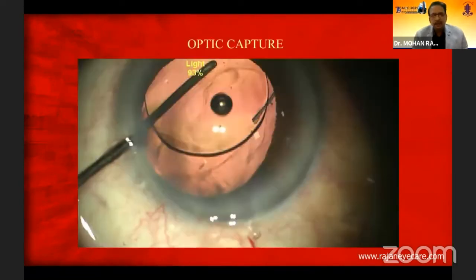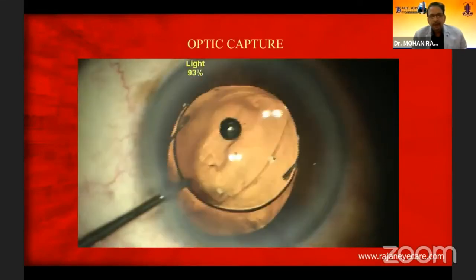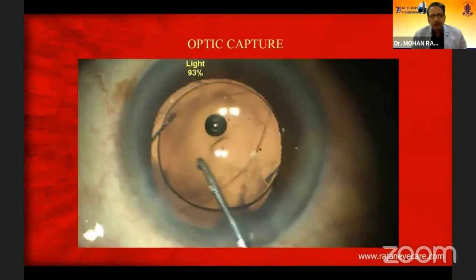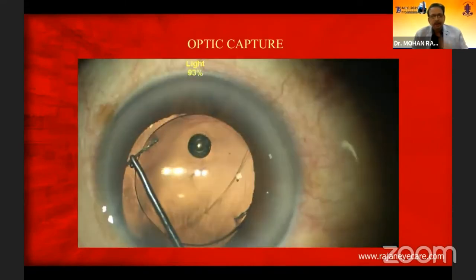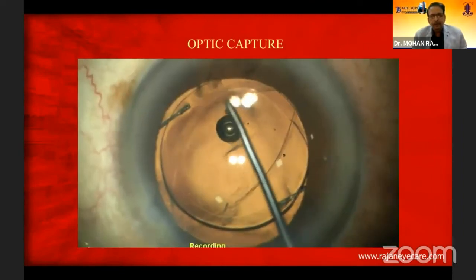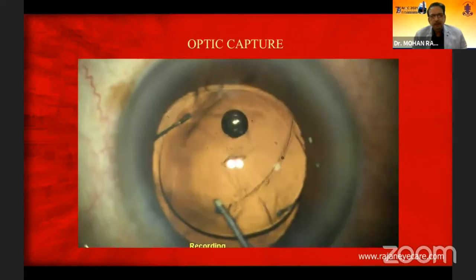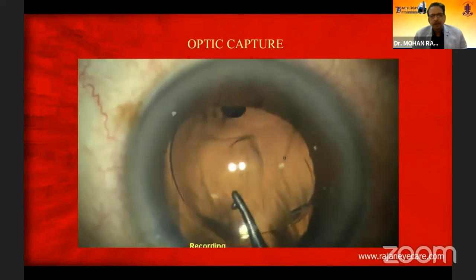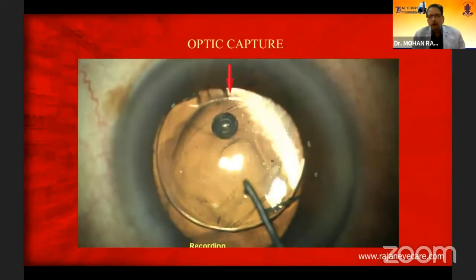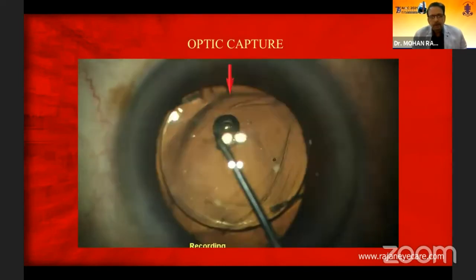Once you have a larger PC tear, I'm trying to do an optic capture. This is a large PC tear in a posterior polar cataract — you can see very typically two pillars on the posterior capsule. The optic capture is done by placing the haptic in the sulcus and the optic is captured into the capsulorrhexis margin.